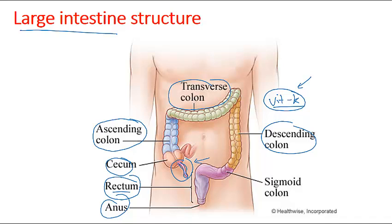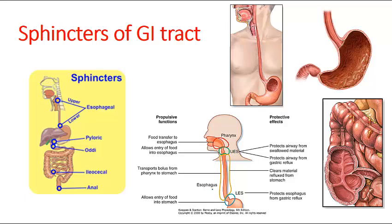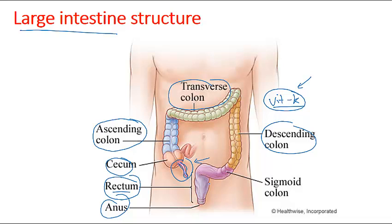The large intestine has three bands of smooth muscle called the teniae coli, which cause the outer portion of the colon to be packed into pockets called haustra. The haustra are regions where the colon is properly embedded in the body, while the rest of the digestive tract is separate from the ventral body cavity.